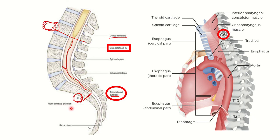The filum terminale — the final terminal part — is attached to the coccygeal area. To summarize the key vertebral levels: spinal cord ends at lumbar 1, dural sac ends at sacral 2, sacral hiatus is at coccygeal 1, and the filum terminale terminates at or very close to the coccyx. These levels are important for MRCS and other exams.